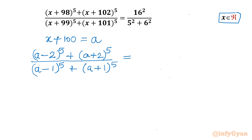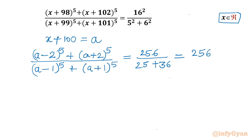On the right hand side: 16² = 256, 5² = 25, 6² = 36, so RHS is 256 divided by 61. Now for the left hand side, we can apply binomial expansion.